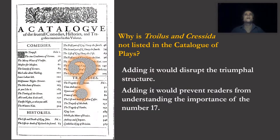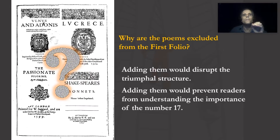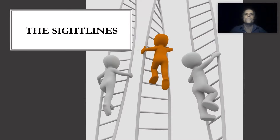Now we have an answer to the long-standing question: why is Troilus and Cressida not listed in the catalogue of plays? Adding it would disrupt the triumphal structure and would prevent readers from understanding the importance of the number 17. We can also answer why the poems are excluded from the first folio — the answer is the same: adding them would disrupt the triumphal structure and would prevent readers from understanding the importance of the number 17. We will now look at the sight lines from the catalogue's headpiece ornament, which I believe are necessary in understanding the authorship issue.